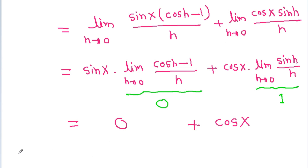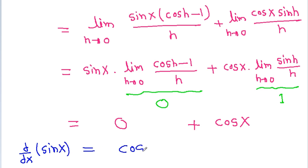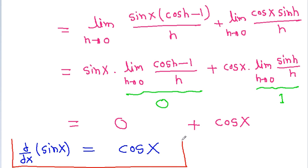So we get sin x times zero plus cos x times one, which equals cos x. Therefore, d by dx of sin x is equal to cos x, and this is our required proof.